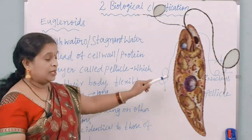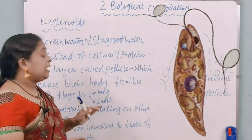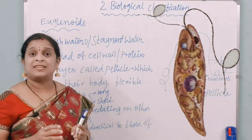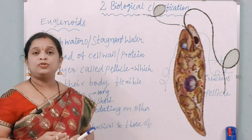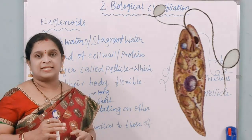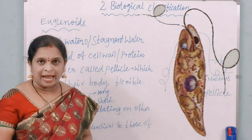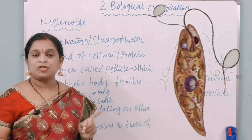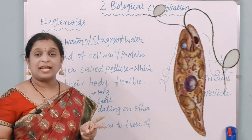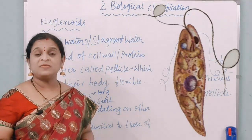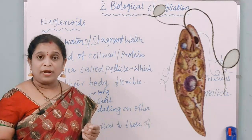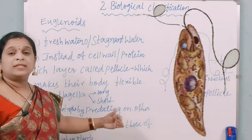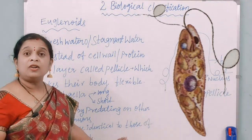Euglenoids consist of two flagella — one short and one long. Most members of euglenoids are photosynthetic, but if sunlight is deprived, they behave as heterotrophs by predating on other organisms. Key characteristics: first, it consists of a protein-rich layer called pellicle instead of a cell wall; second, it behaves like a heterotroph when sunlight is deprived. The pigments are identical to those of higher plants.